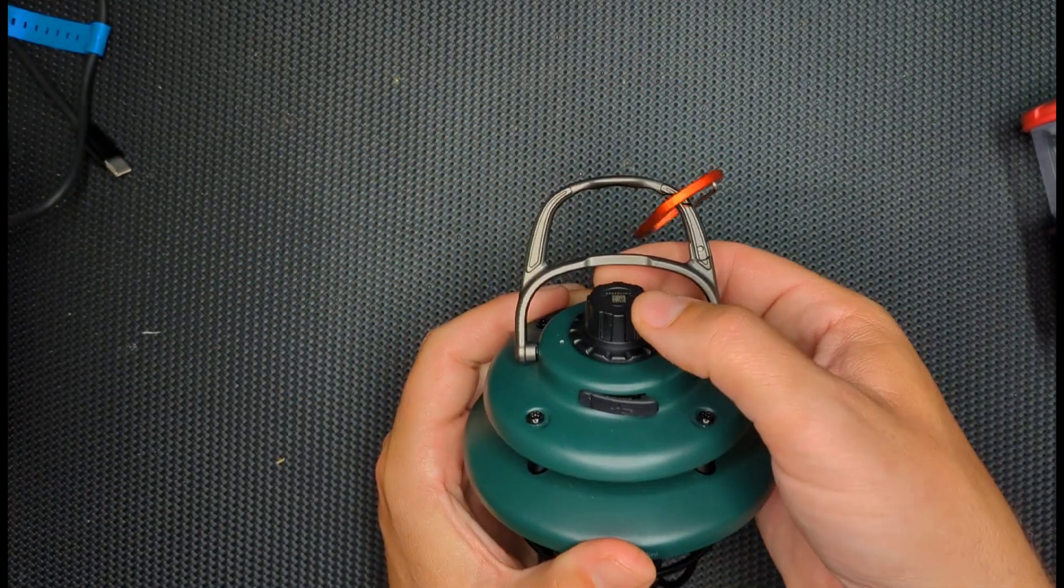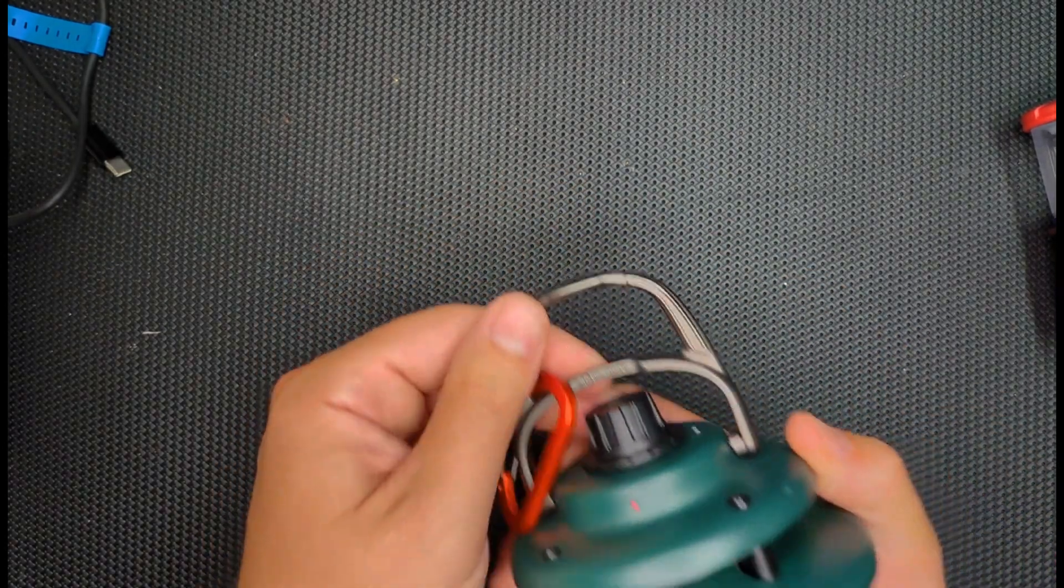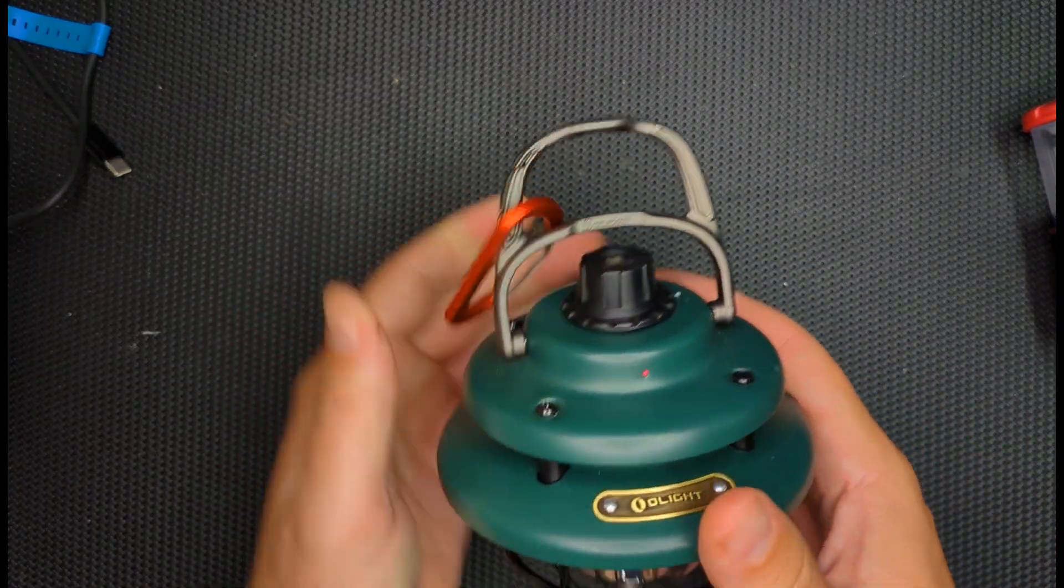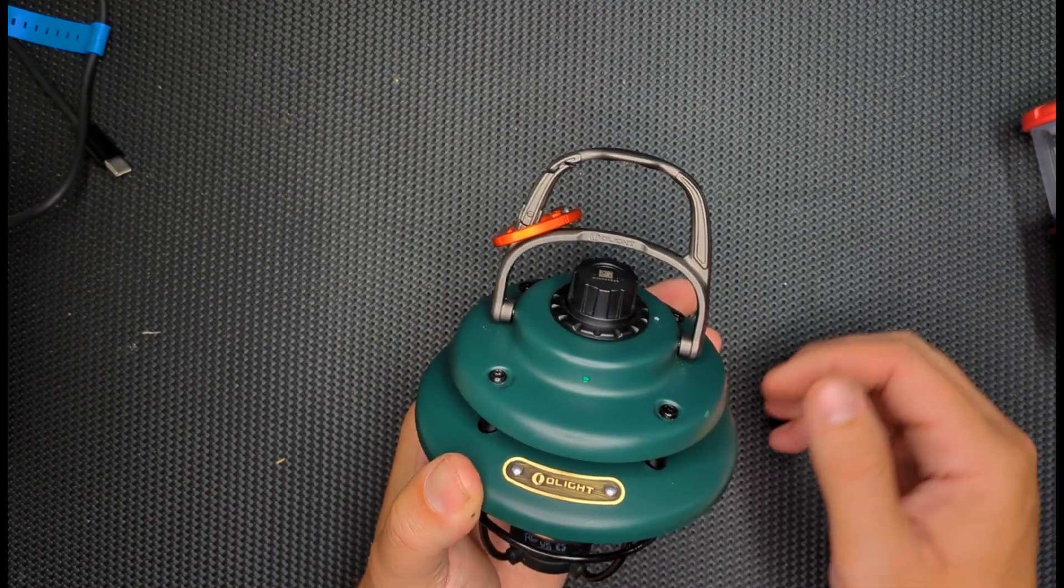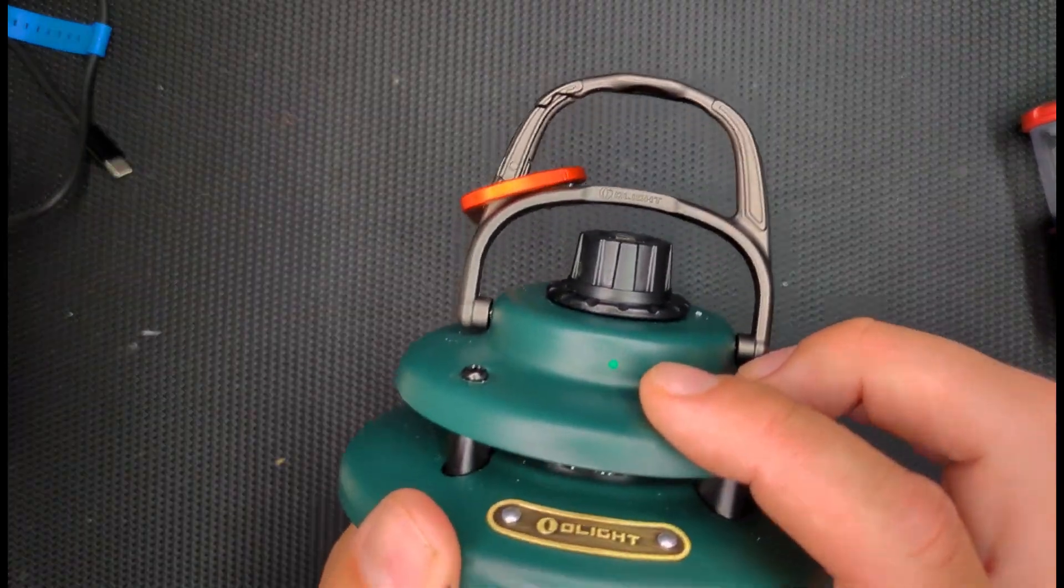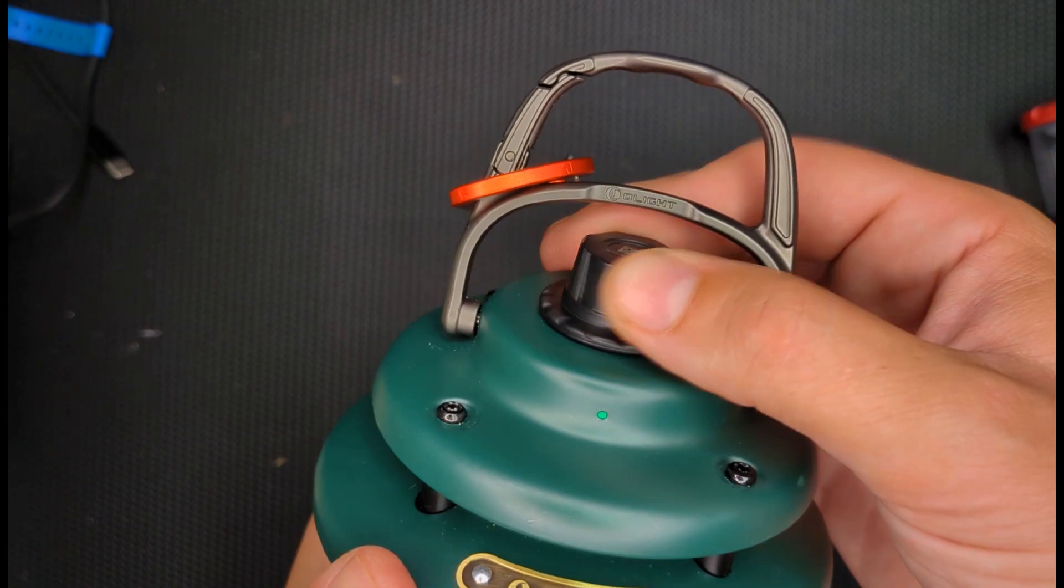The lockout mode is super simple. You just click it twice, and a red light comes on, and now you're locked out. So super easy to lock out. And then click it twice again, and now that light turned green, and you're good to go.